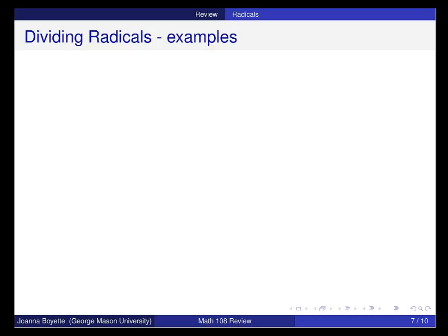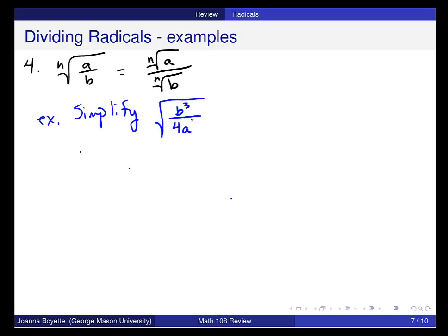Dividing radicals, we use a 4th property. And that property is that if I have the nth root of some fractional amount, that I can split into 2 roots. So the example, simplify square root of b cubed over 4a squared. And I want to split this up. The denominator is a perfect square. So this is the square root of b cubed and the square root of 4a squared.